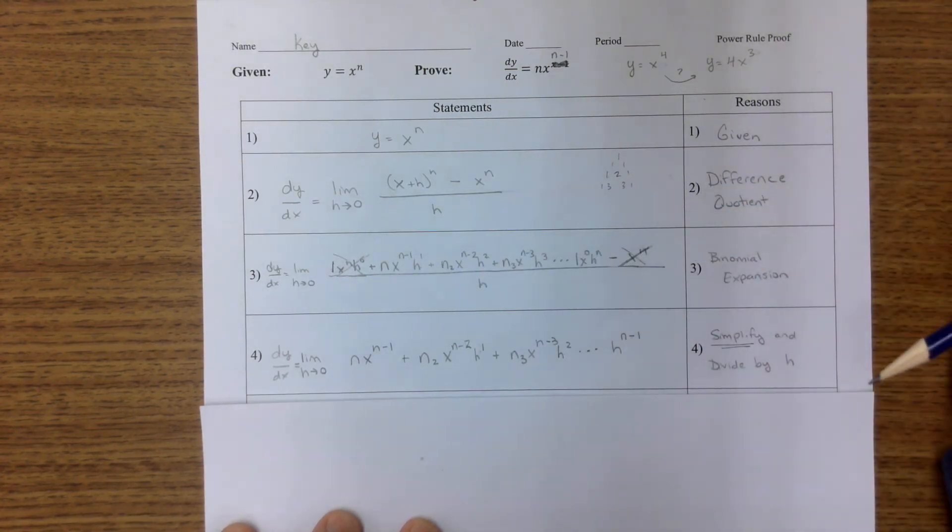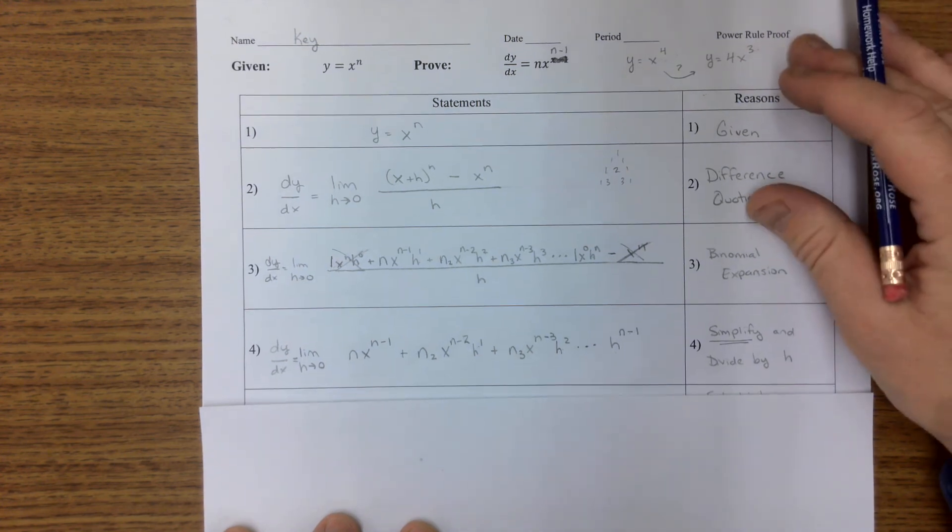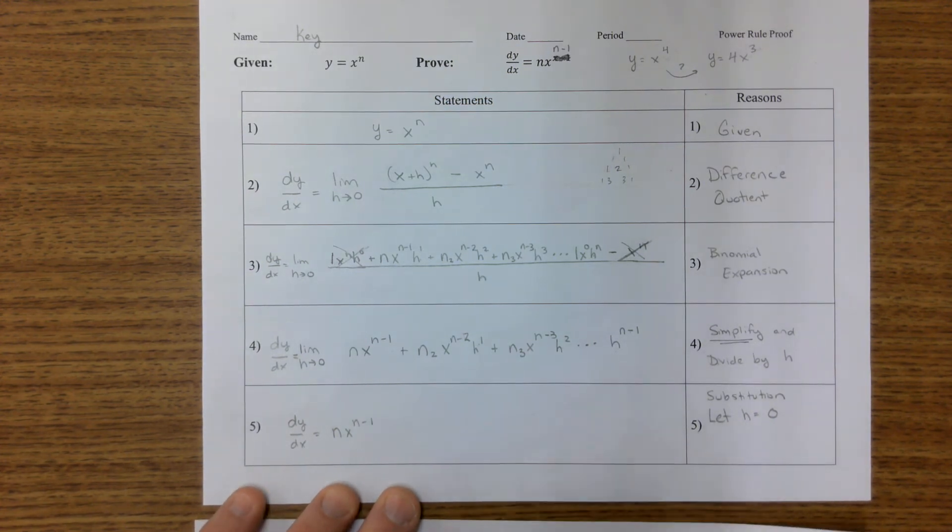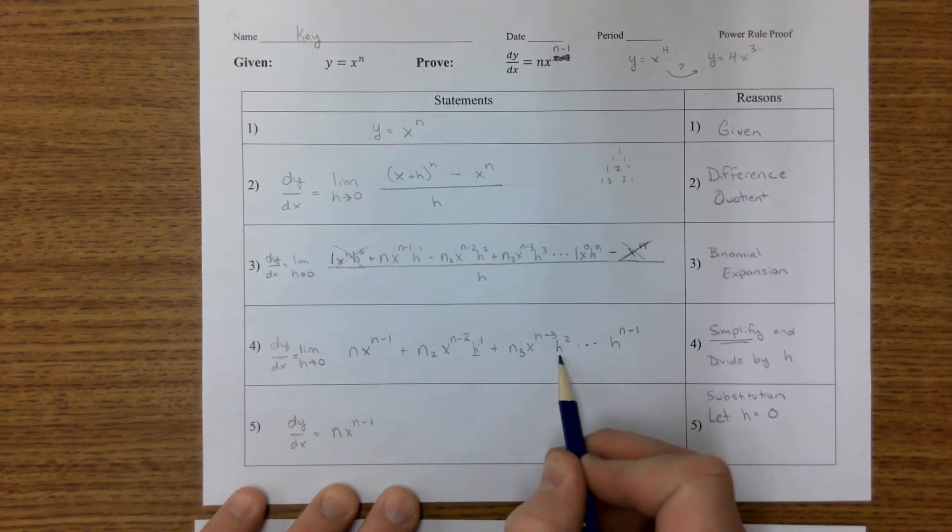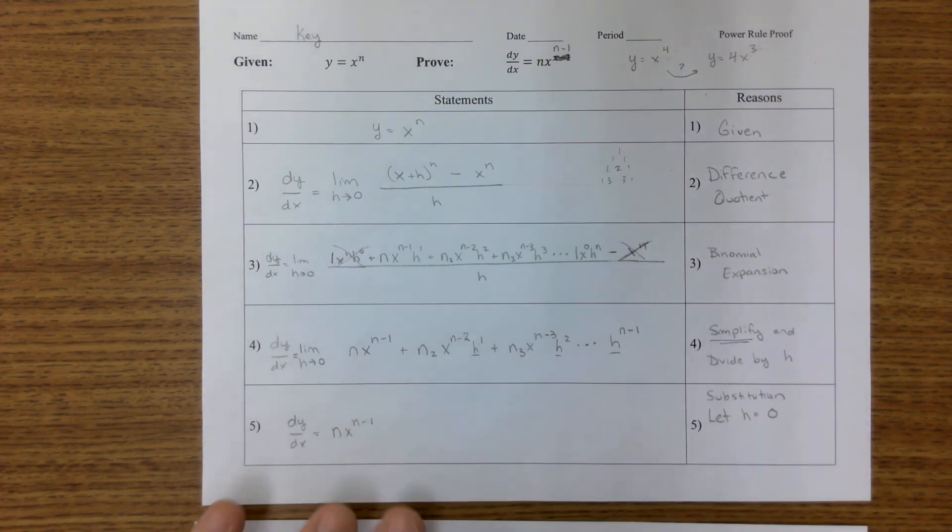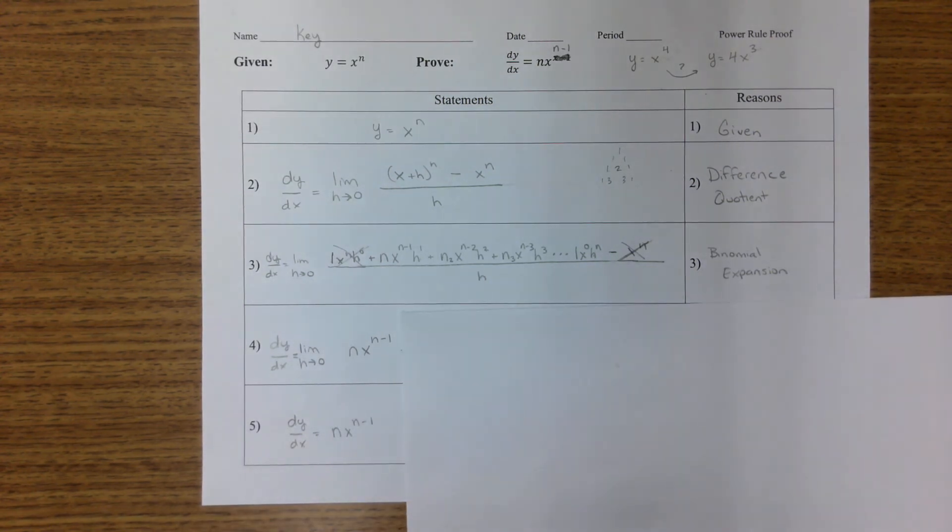And why do we have a simplified version now? Because now we can find the derivative. We can substitute in h as zero. So if I put a zero here and here and here and everywhere in between, all of these are gone. All of those expressions will be zeroed out.